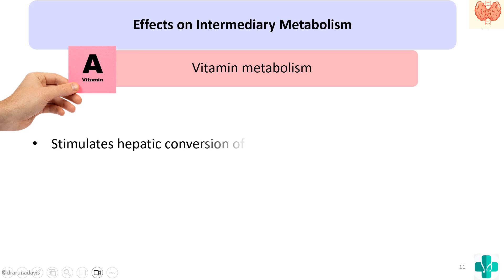The hepatic conversion of beta carotene to vitamin A is stimulated by thyroid hormones. So if there is no thyroid hormone, beta carotene will not be converted to vitamin A, and there will be an increased amount of beta carotene in the blood. This accumulation of beta carotene is a feature of hypothyroidism. Thus we have seen all four aspects of intermediary metabolism: carbohydrate, protein, fat, and vitamins.